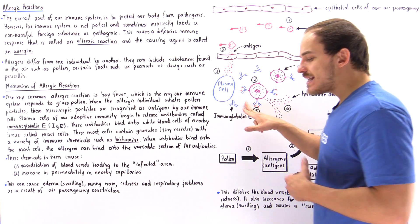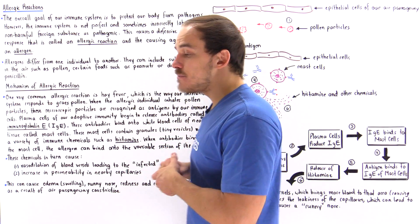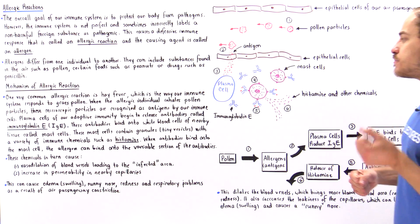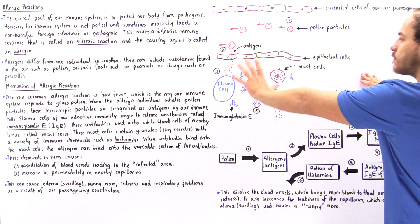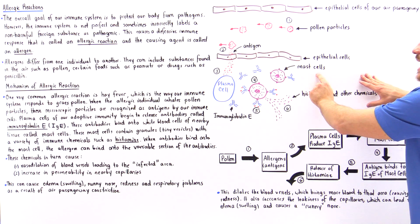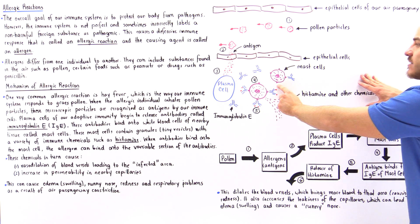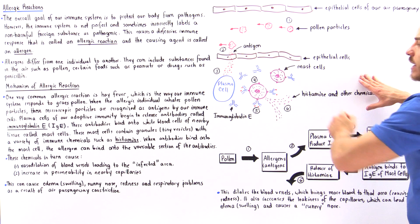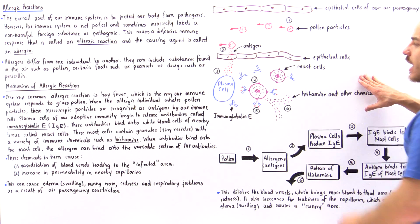What these immunoglobulin E antibodies do is they move onto the cell membrane of special white blood cells found in the nearby tissue known as mast cells. So these mast cells contain these receptors that can bind to the constant region of our antibody as shown in the diagram.